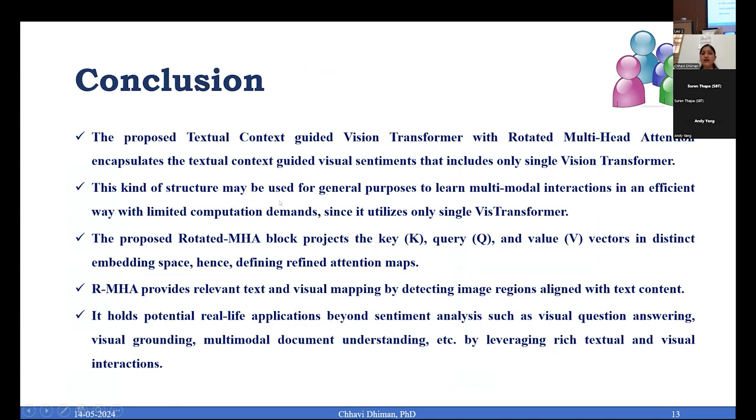This is the concluding slide where we have presented a textual context-guided vision transformer with rotated multi-headed attention. This structure is used for general purposes to learn multi-modal interactions in an efficient way with limited computational demands. The rotated multi-headed attention block projects the key, query, and value vectors in a distinct embedding space, which provides refined attention maps that resulted in outperforming results. It holds potential real-life applications beyond sentiment analysis, like visual question answering, visual grounding, multi-modal document understanding. Thank you for patient listening.